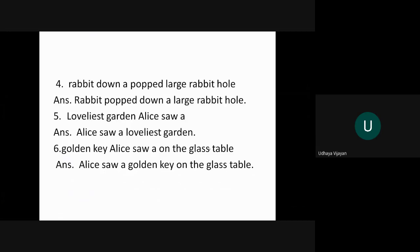So come to sixth number. The golden key Alice saw a on the glass table. Alice saw a golden key on the glass table. So this is all about today's class.